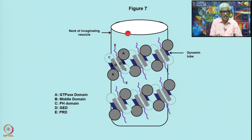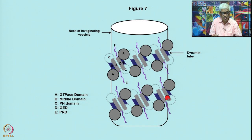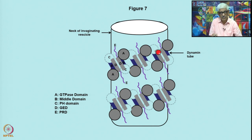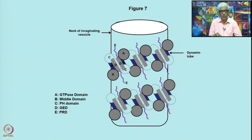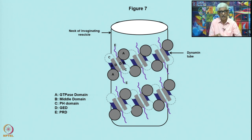This is the neck of the envisioning vesicle, this is the membrane surface. The GTPase domain, middle domain, PH domain, and GED are all shown: GED (D) is associating, A is the GTPase domain, and C is the PH domain, from two different molecules on opposite sides. This wraps around the vesicle — this is the dynamine tube. Therefore we say this is the kind of dynamine tube which wraps around the neck of the envisioning vesicle. That is how the process of endocytosis occurs. For the biological process to happen — the separation of the budding vesicle — GTPase hydrolysis is required to generate and separate out the budding vesicle.